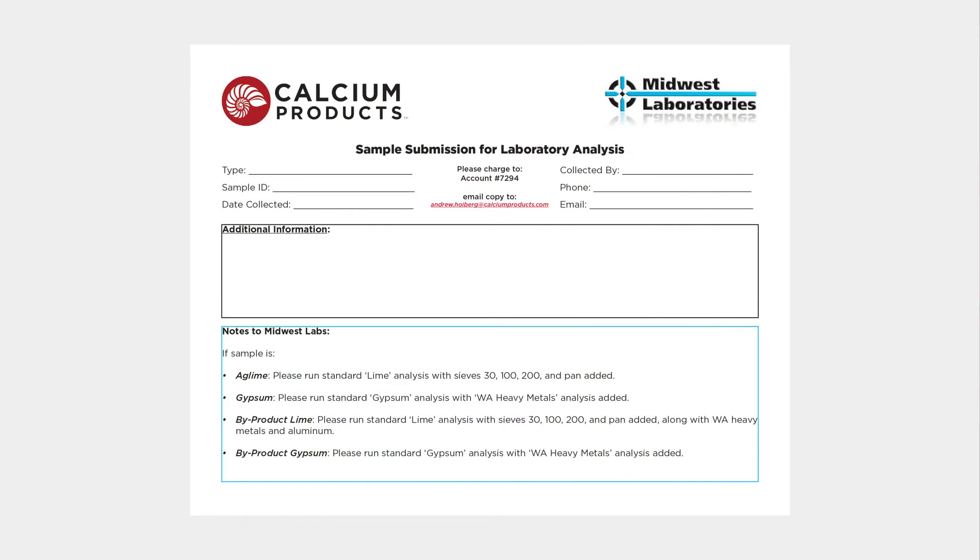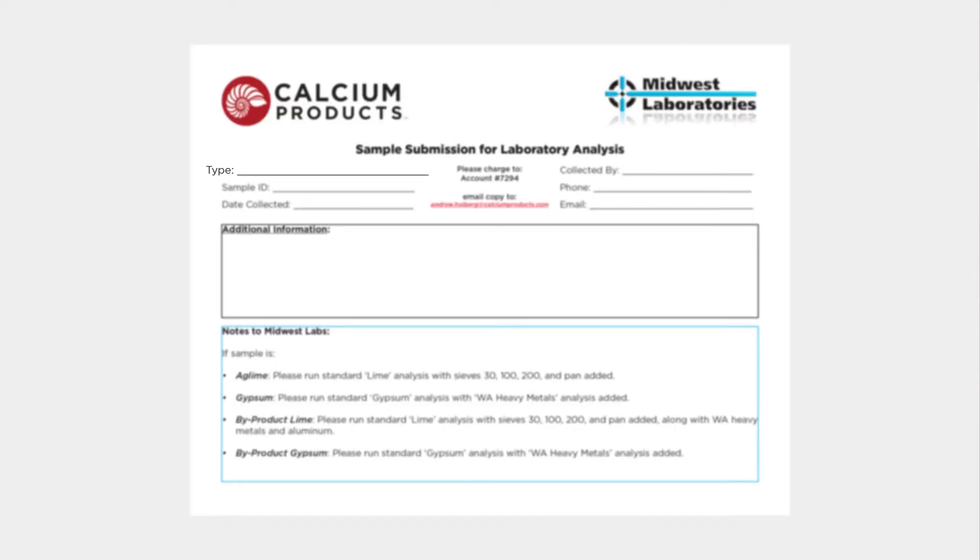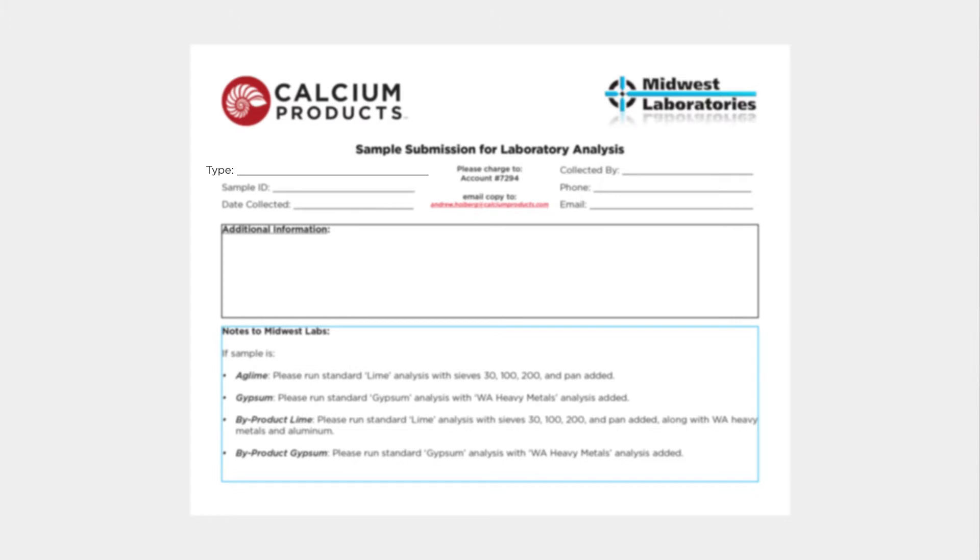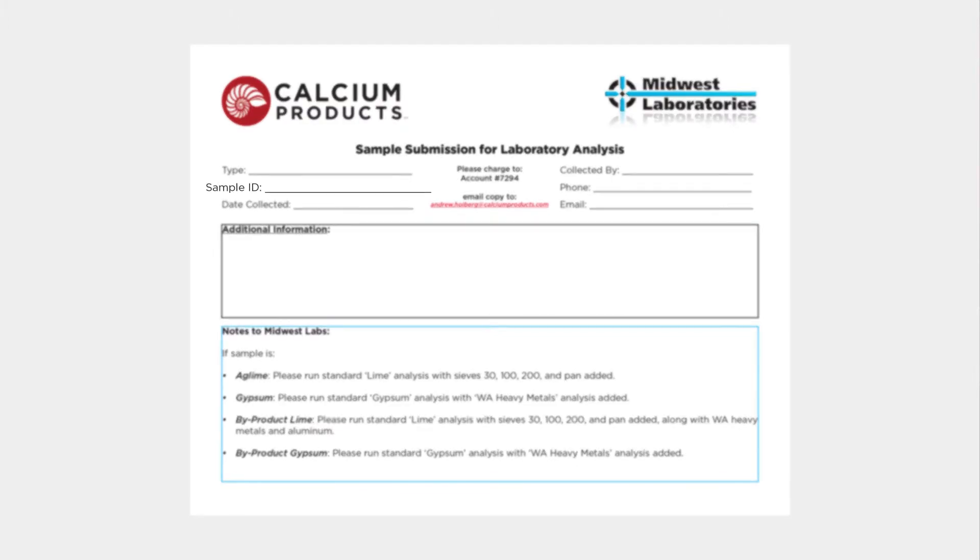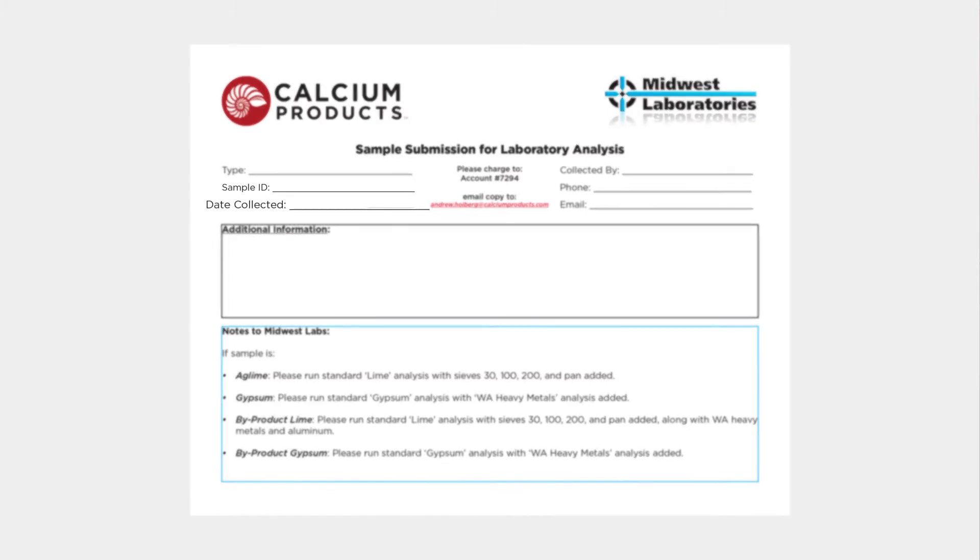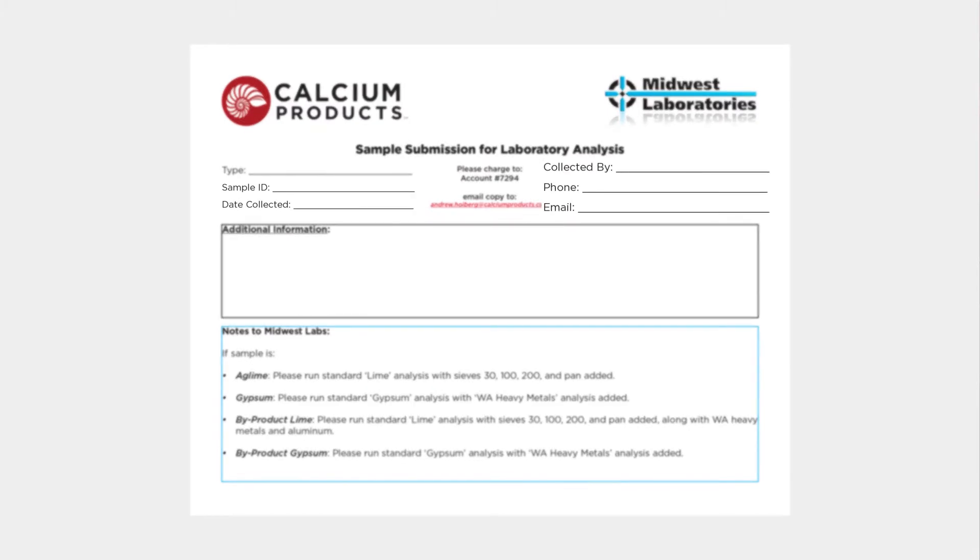Next, we'll focus on the submittal form. We're going to want to know what type of material this is, if it's an ag lime or a pelletized lime or a water treatment lime. For the sample ID, we need to know where the sample was collected geographically. Fill that out there. What was the date, who it was collected by, and then your contact information.